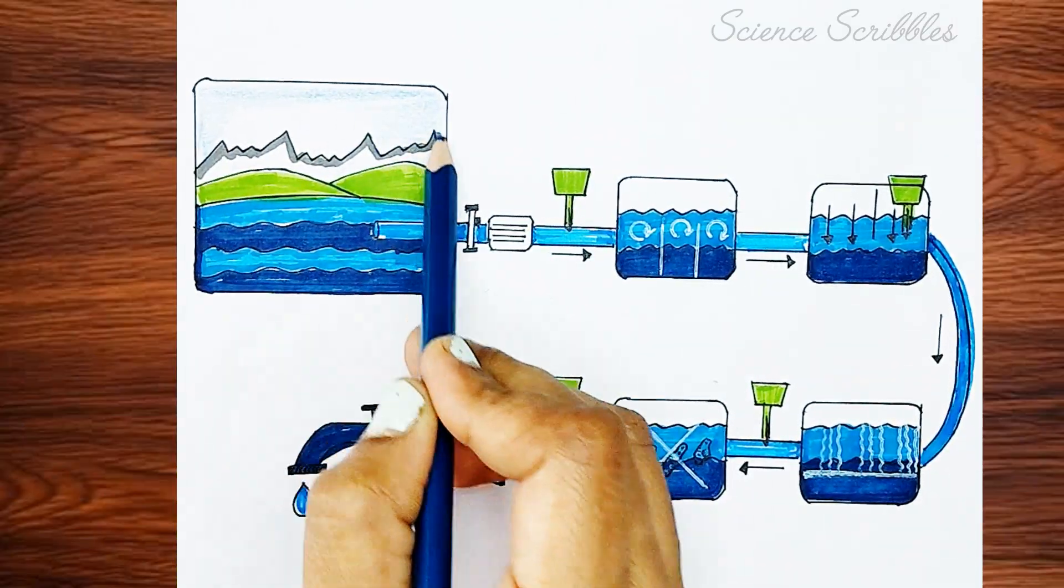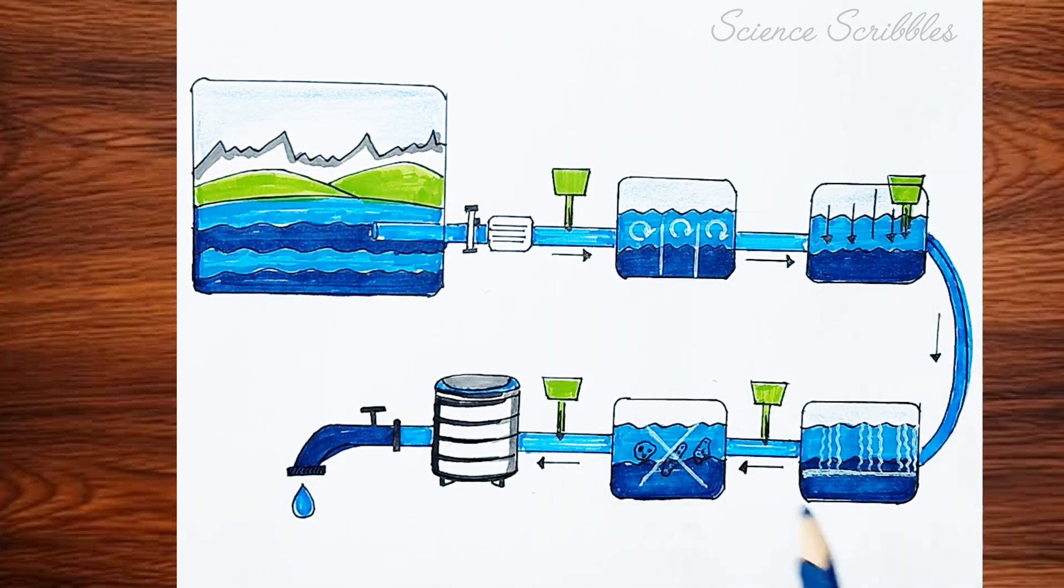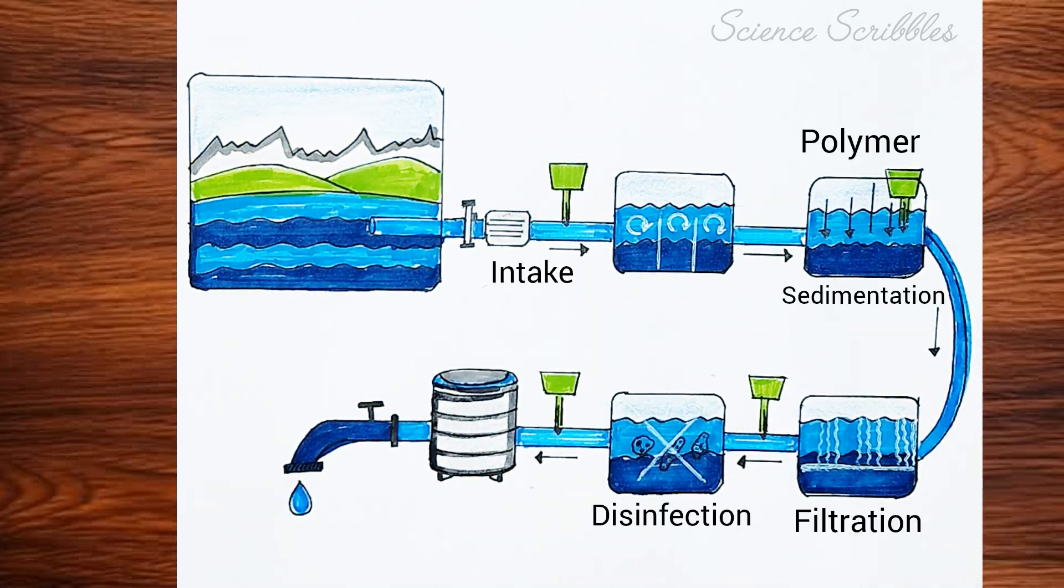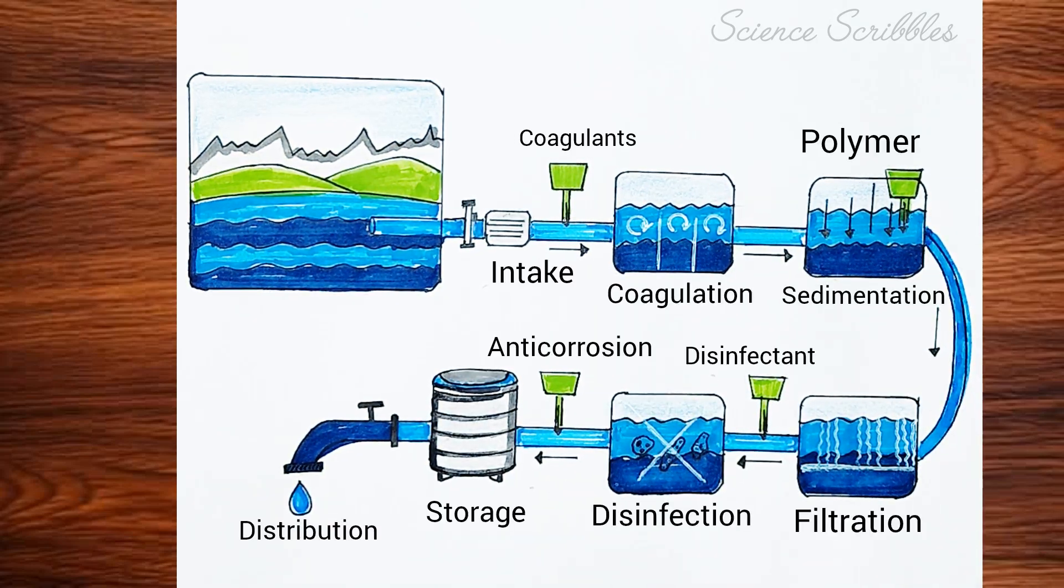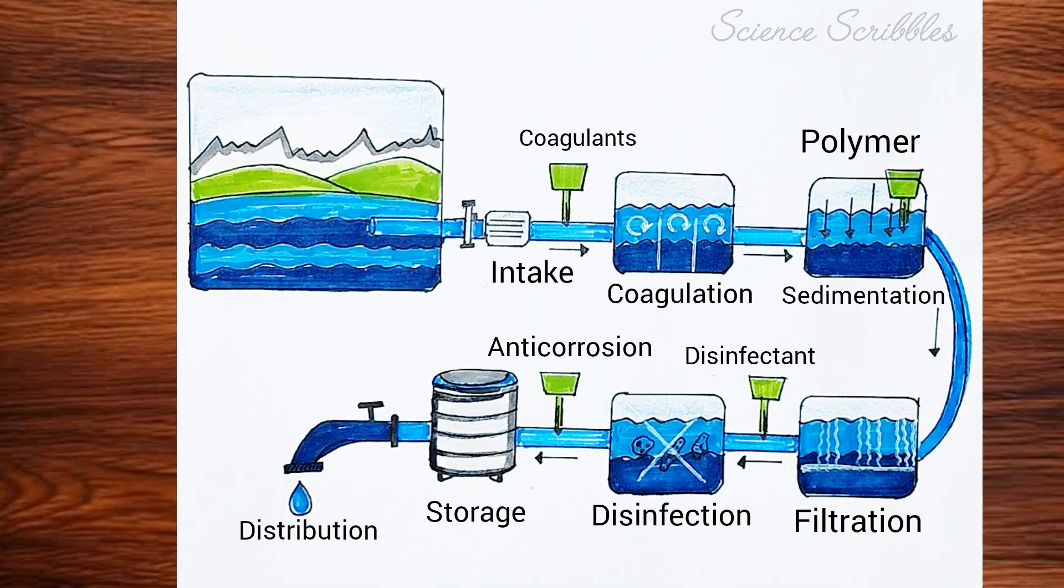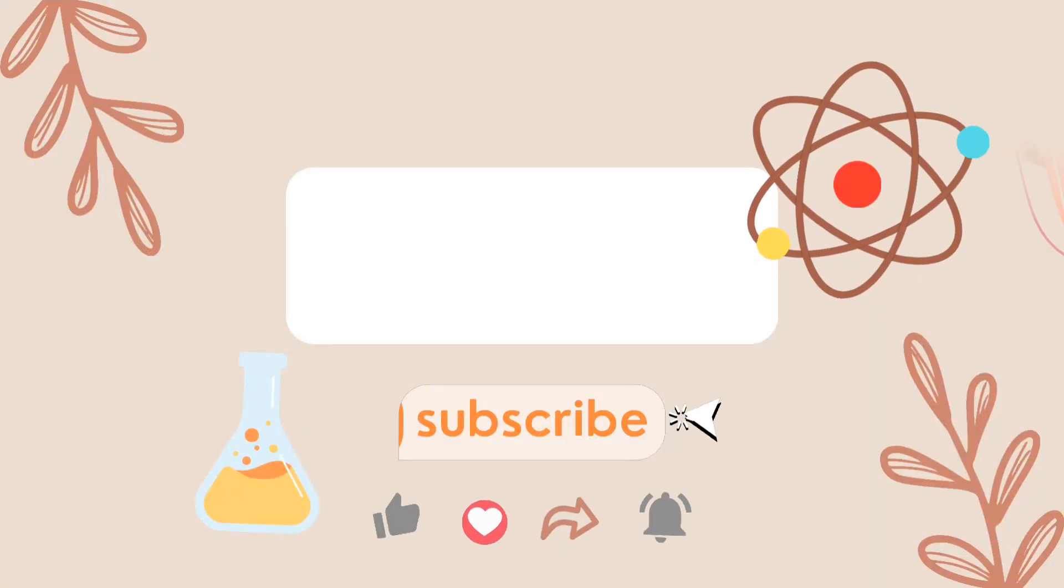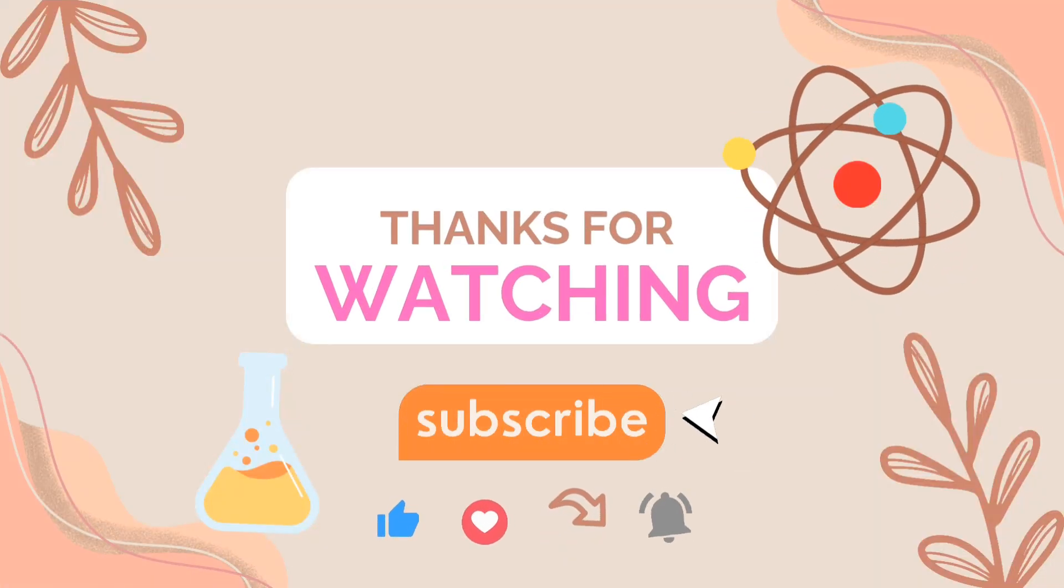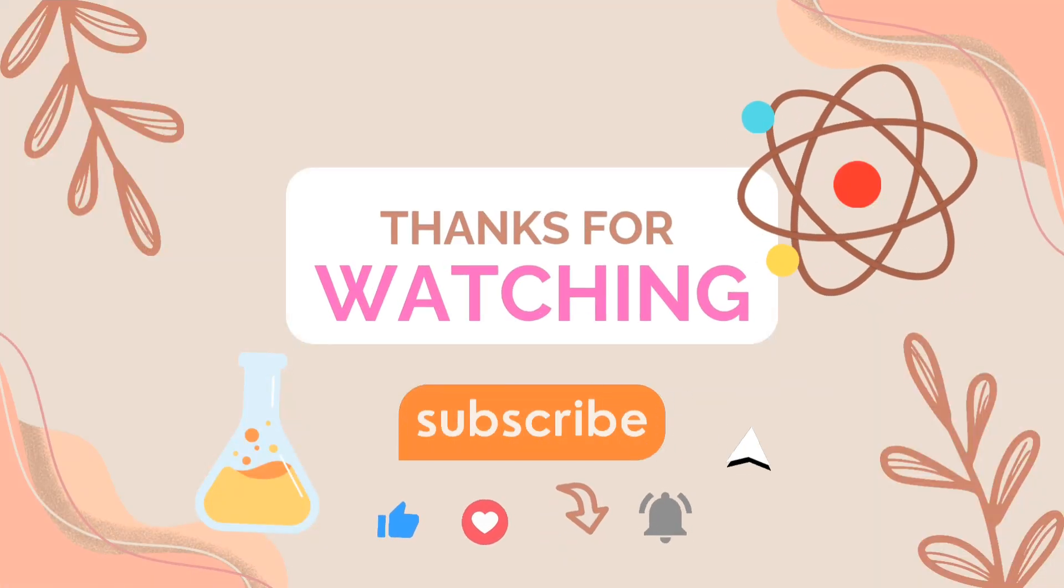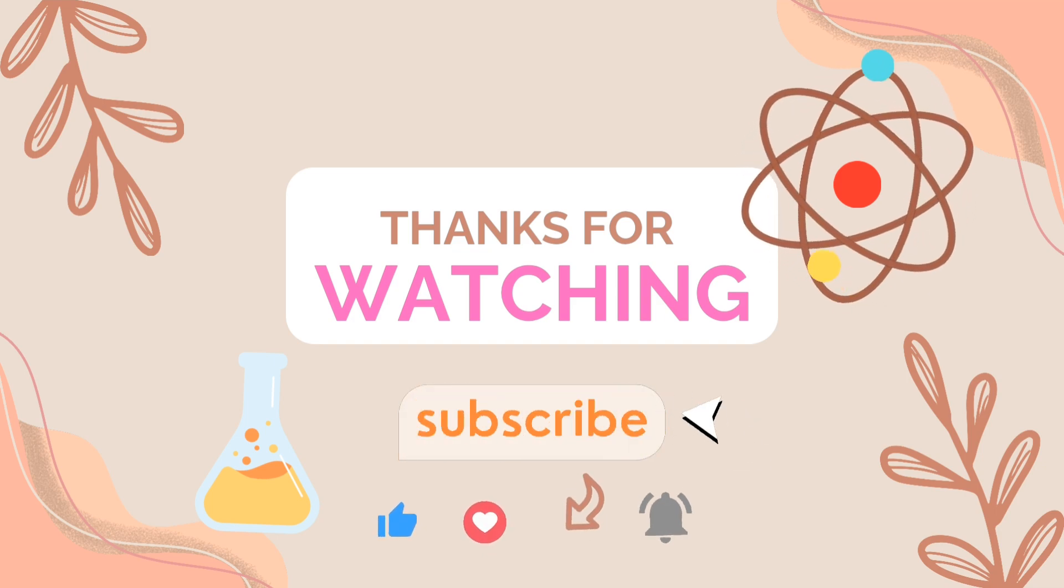Now, I am going to label the different parts of the water treatment process: Intake, Coagulant, Coagulation, Polymer, Sedimentation, Filtration, Disinfection, Anticorrosion, Disinfectant, Storage, and Distribution. Thank you for watching.